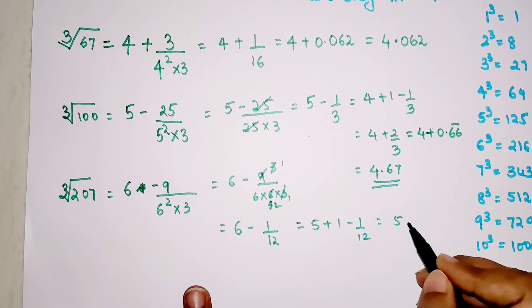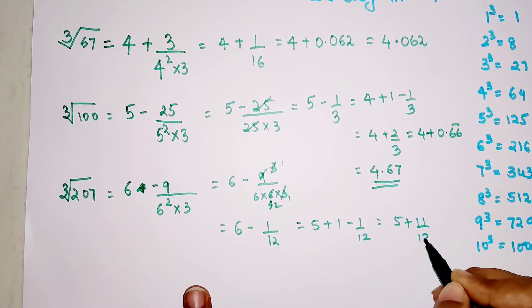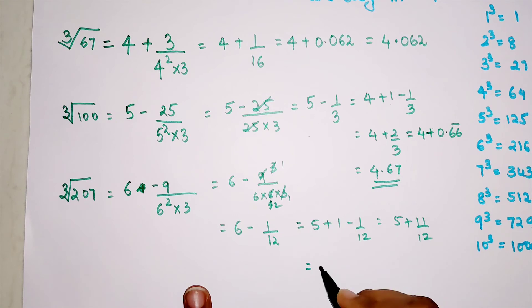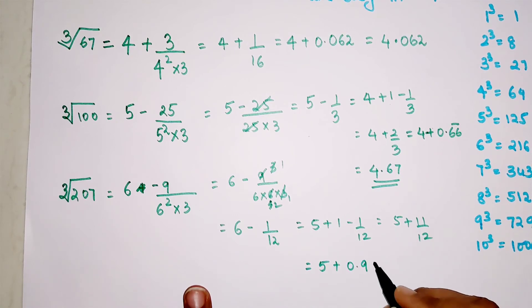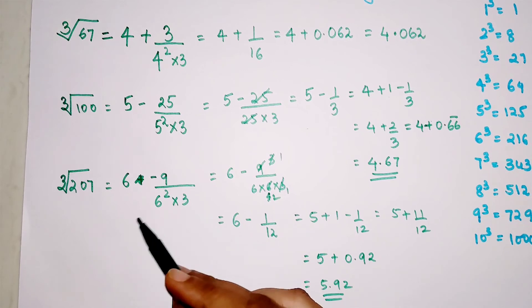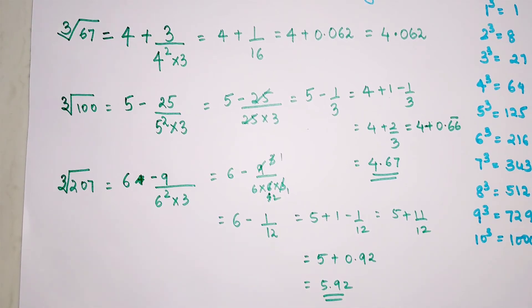This changes to 5 plus 11 by 12. So now your answer becomes 5 plus 0.92, so the answer is 5.92. That is your answer for the cube root of 207.